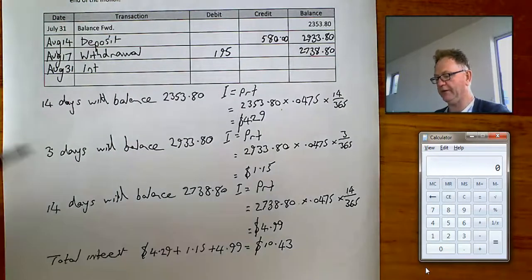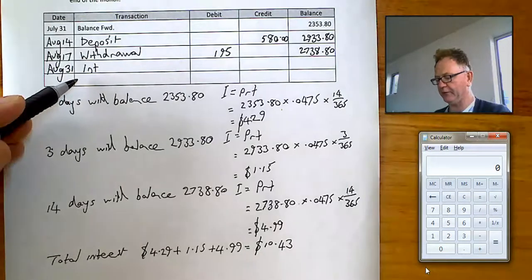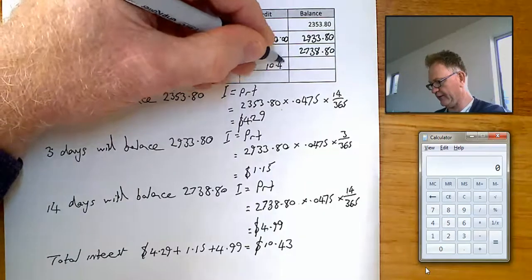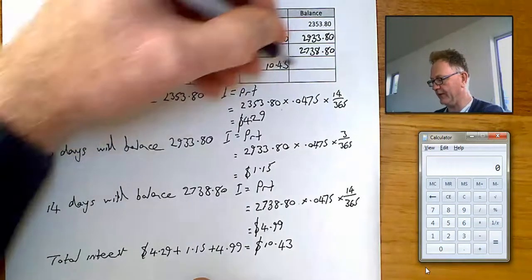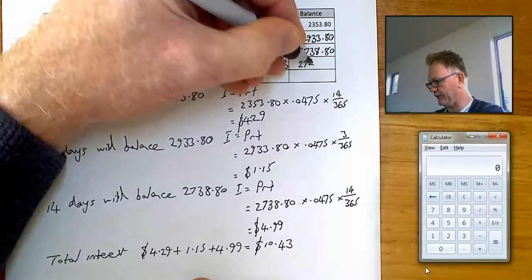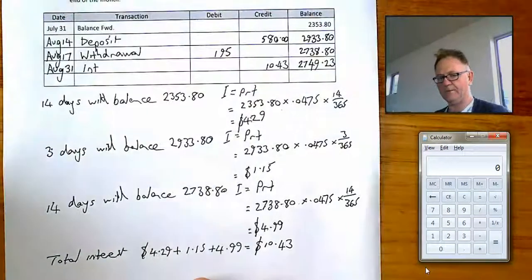You can enter that up here as the last transaction for the month. Interest was added. It goes in the credit column. $10.43. You can add that to the balance already there to find his balance at the end of the month. $2,749.23.